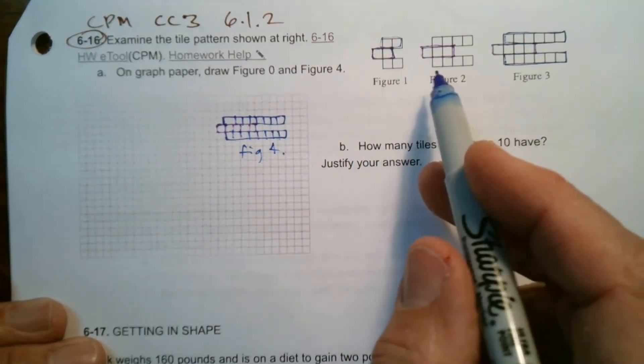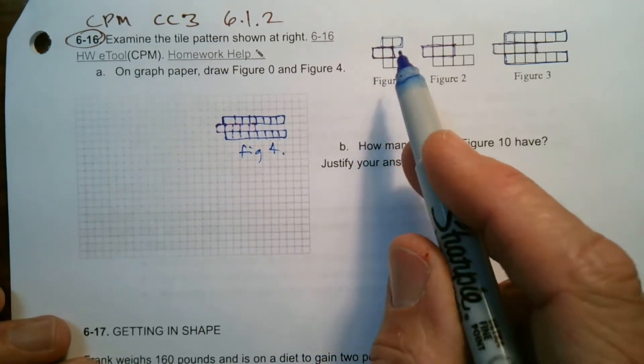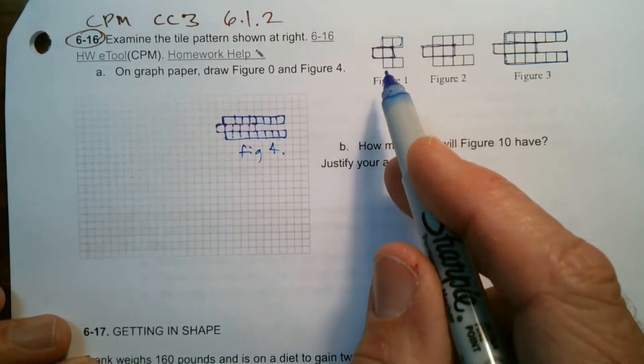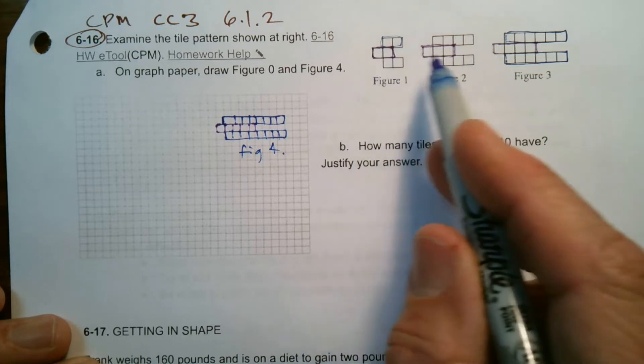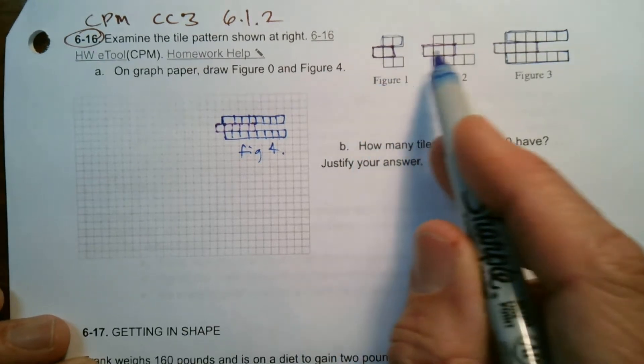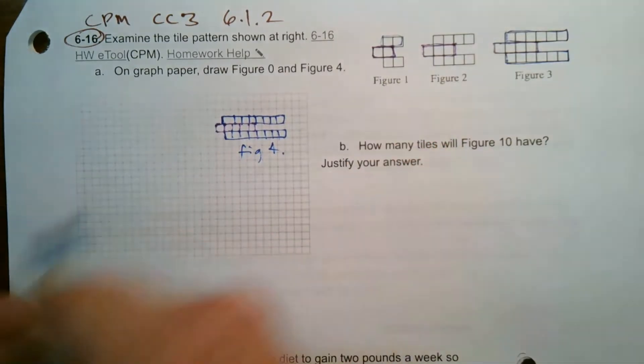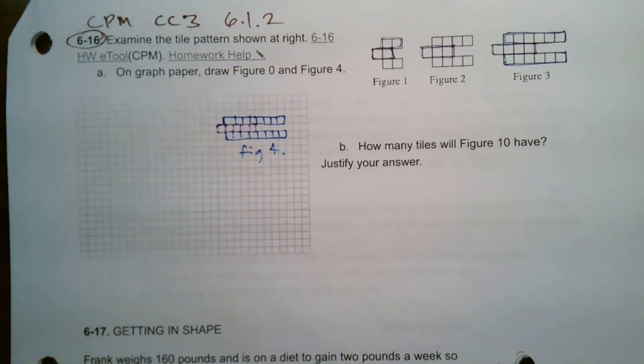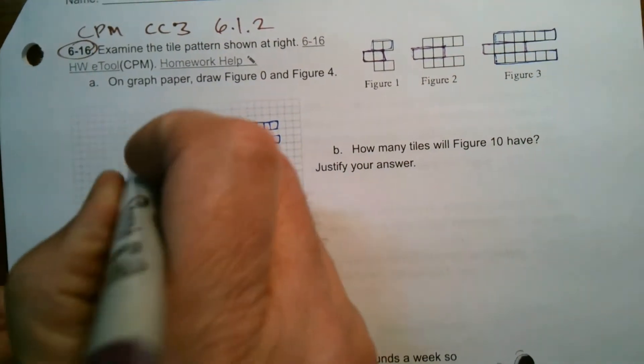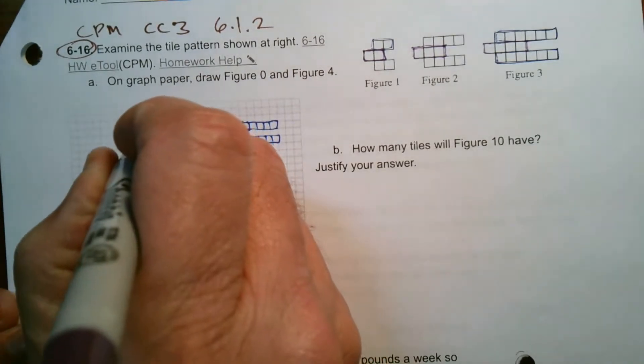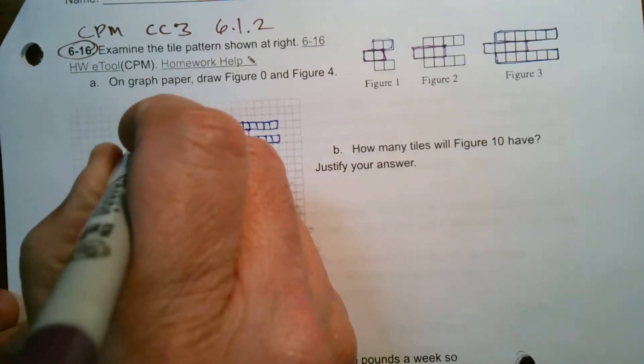Then it wants to know what about Figure 0. So let's work our way backwards. Figure 0, if you think about it, my middle here was just dropping down by 1 each time. And so Figure 0, the middle piece for Figure 0, is just going to have one square in the middle.